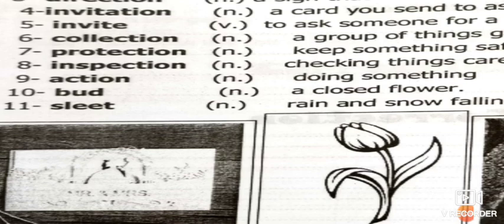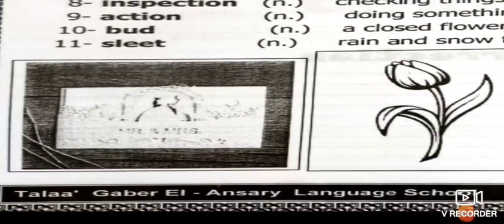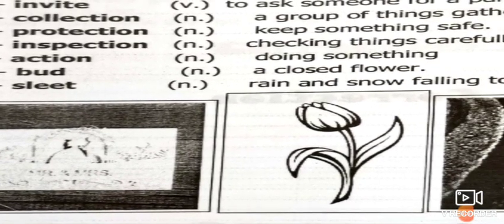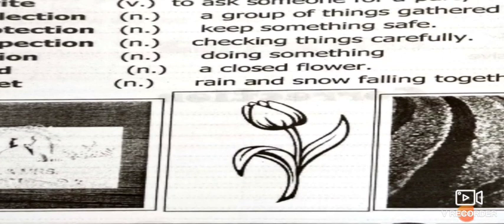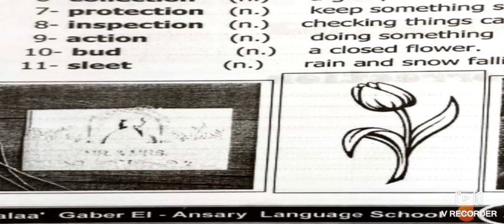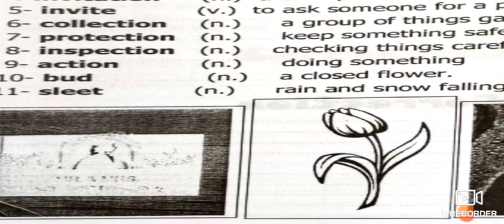Number ten: 'bud.' Look at the picture — the flower before it opened is called a bud, a closed flower. A closed flower which means it's not opened yet. B-U-D, bud, means a closed flower.